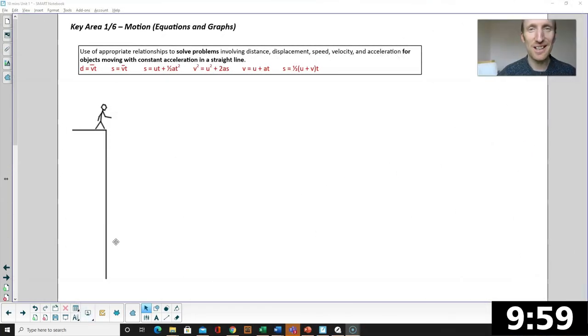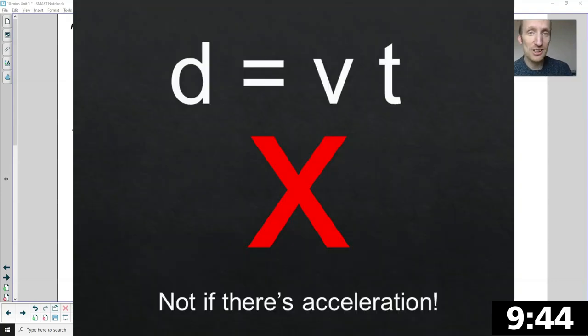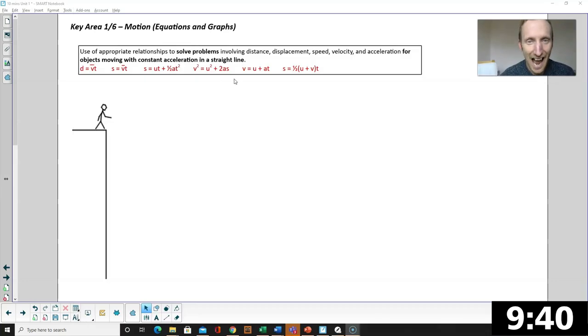Key area one is motion, equations and graphs. We need to solve problems for objects moving with constant acceleration in a straight line. So that is something that is dropped or maybe like a car that is moving in a straight line but one dimension. Now the higher acceleration comes into it a lot. You can't use your speed distance time equation if something's accelerating. You have to use one of the more complicated equations of motion.